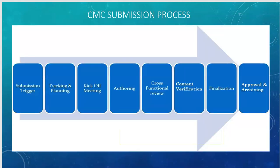For the CMC submission process, I have laid out a general submission process based on my experience working at three or four companies. Whenever you have a submission, you start planning — you hold a kickoff meeting with cross-functional teams, identifying who the author of each section is and what information needs to go into each section. Then there is an authoring phase where you draft the sections, everybody reviews, and you perform content verification — checking all information against source documents. You then finalize and file, and wait for approval and archiving.